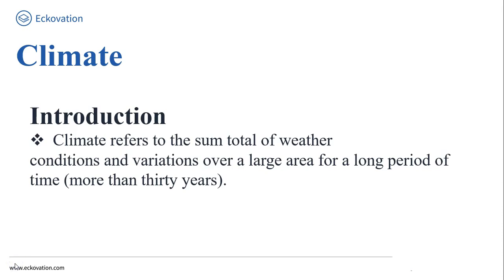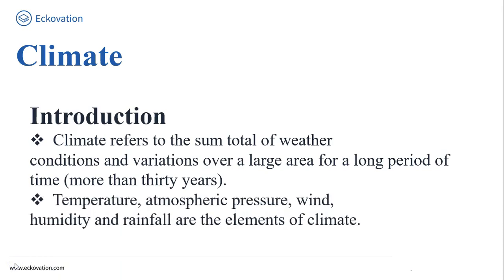That was about climate. Now let's talk about weather. Weather refers to the state of the atmosphere over an area at a point of time. When we talk about the elements of weather and climate, these are the same elements — such as temperature, atmospheric pressure, wind, humidity, and rainfall. These are the elements of both climate and weather.